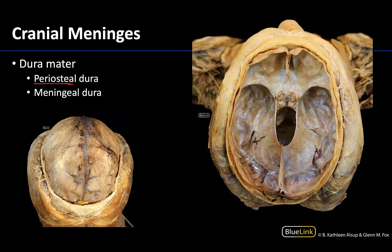In certain areas, the meningeal dura will reflect away from the periosteal dura to allow for the dural venous sinuses to flow. You can see that closely adhered to the bone would be the periosteal dura, and then a reflection occurring where the meningeal dura heads off to form a partition. This dark area is where a dural venous sinus would flow. Anything that is reflecting off will be part of that meningeal dura.